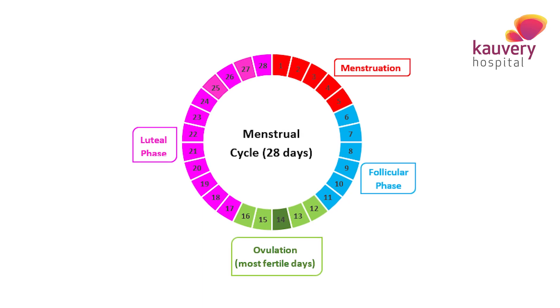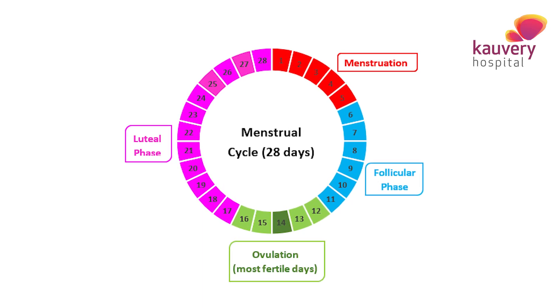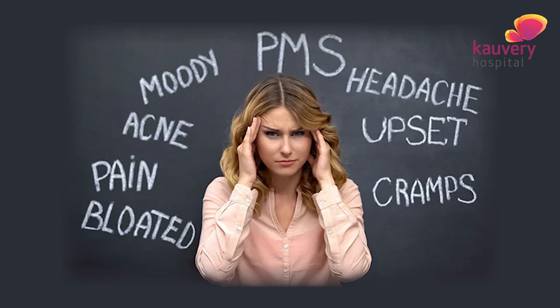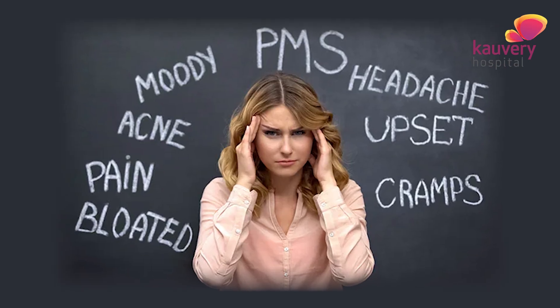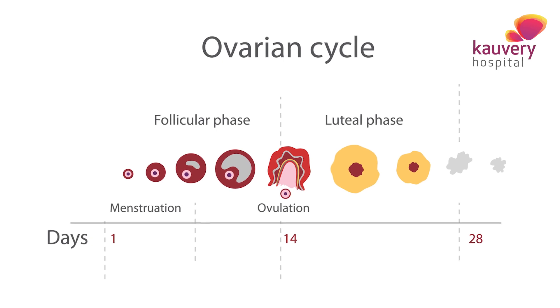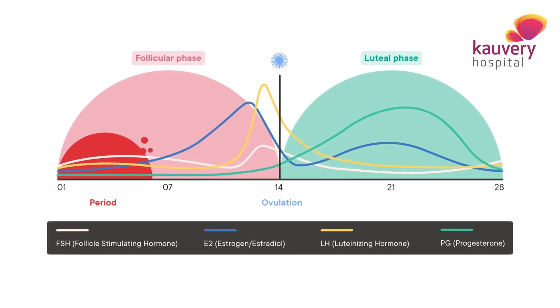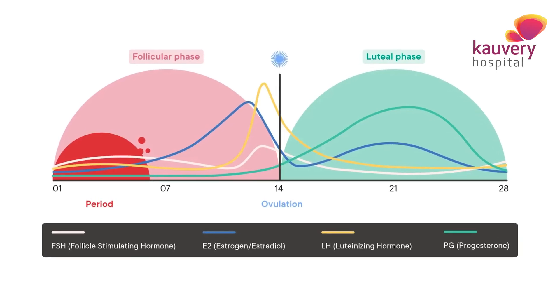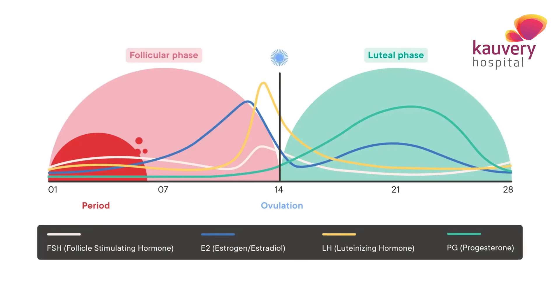Normally a female patient menstruates every 28 days. Soon after menstruation, hormonal changes take place and roughly on the 14th day, ovulation occurs. The first half of the cycle is called the proliferative phase, and the second half is called the luteal phase.